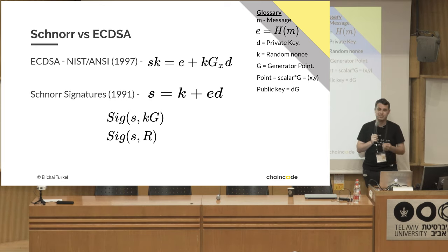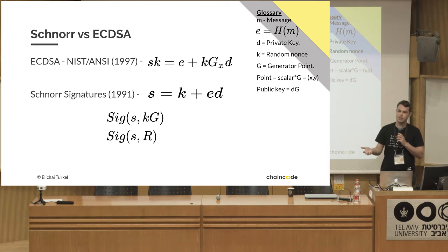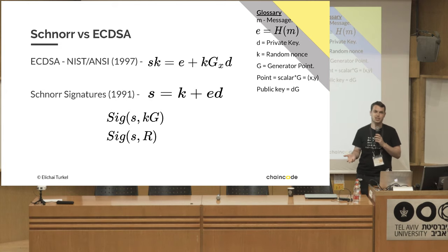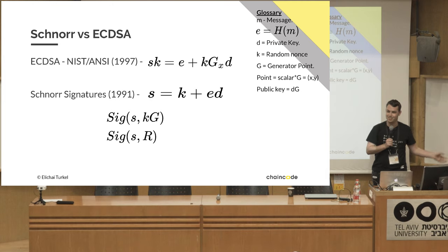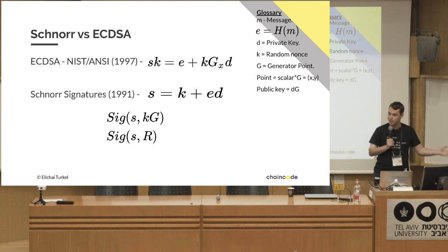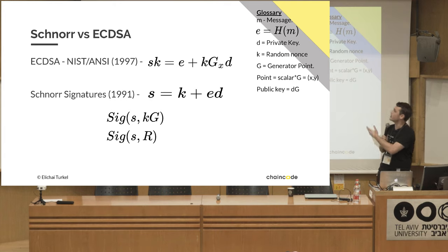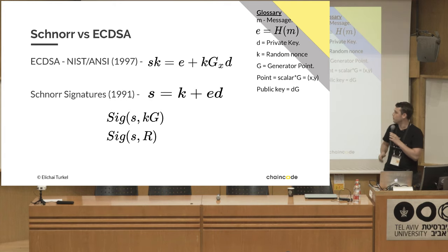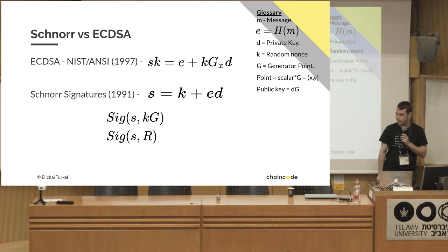Because of that weird mix of elliptic curve and scalar operations, as far as I know there is no security proof for ECDSA — no proof showing ECDSA is as hard as discrete log. We have no reason to believe otherwise; no one thinks ECDSA is breakable. But in Schnorr, because we don't have this weird mix, there are proofs showing Schnorr is as hard as discrete log.